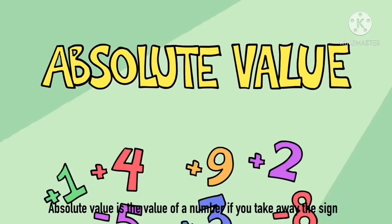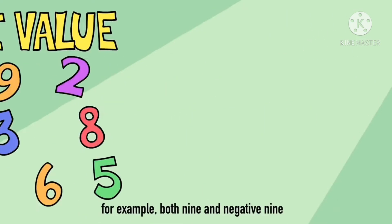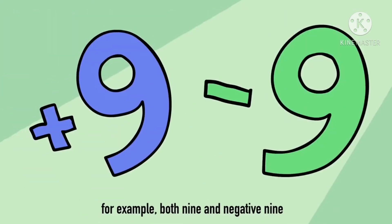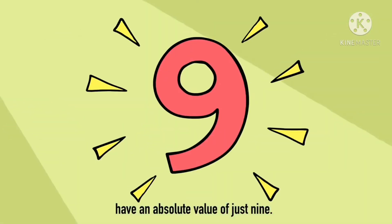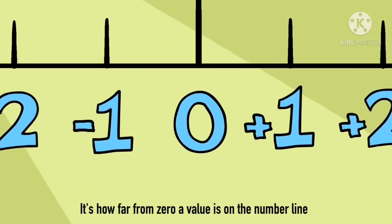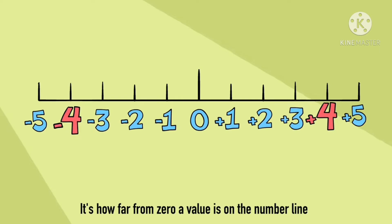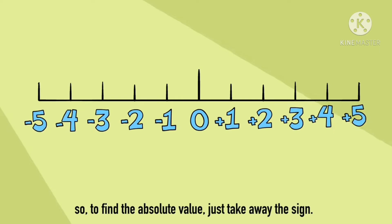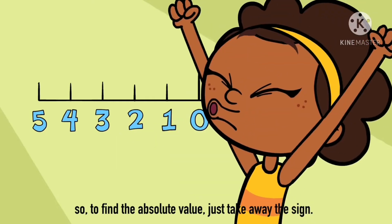Absolute value is the value of the number if you take away the sign. For example, both 9 and negative 9 have an absolute value of just 9. It's how far from zero a value is on the number line. So to find the absolute value, just take away the sign.